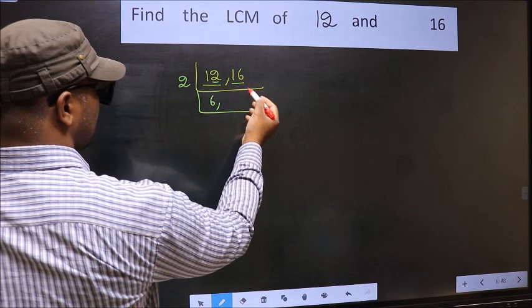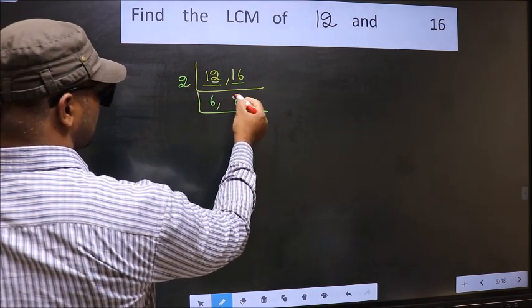Now the other number 16. When do we get 16 in 2 table? 2, 8, 16.